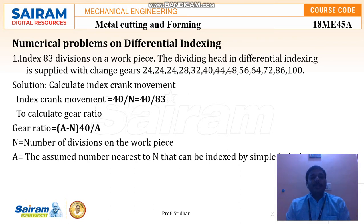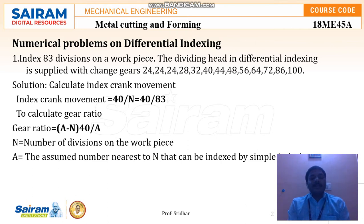There will be 83 divisions on the work piece. The dividing head for differential indexing is supplied with change gears having a range of numbers starting from 24 to 100. Based on the work piece and how many gears have to be cut, we need to find out using this differential indexing. We need to identify how many driver gears or driven gears are required and whether an idler gear is required. Based on the given conditions we will find out all this using the differential indexing method.